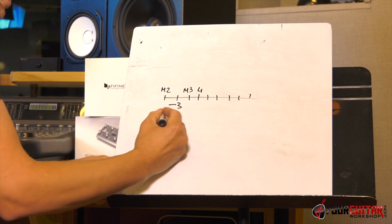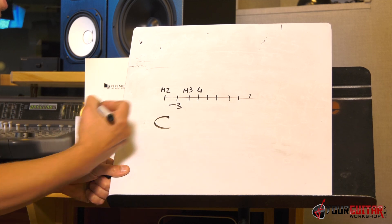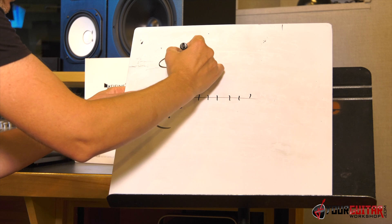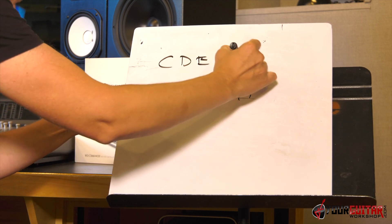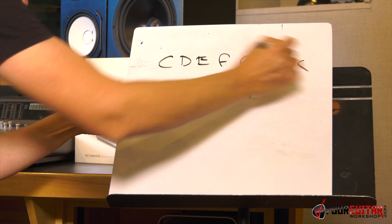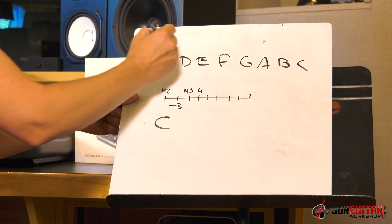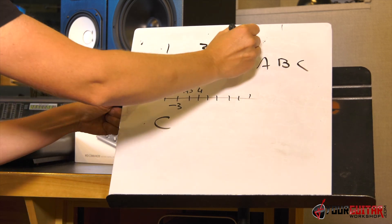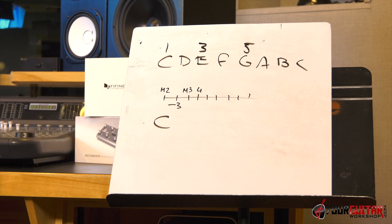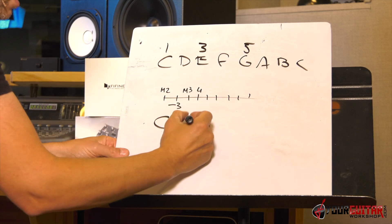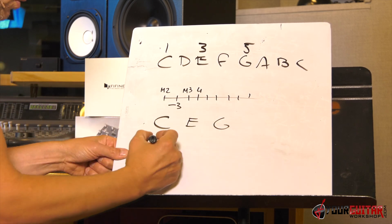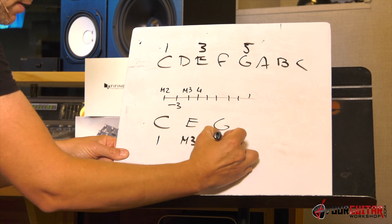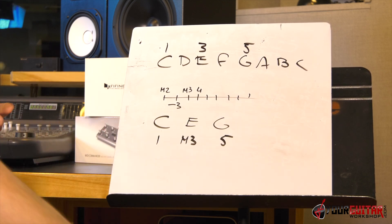The chord that we're playing is C, and so if we have the C scale here — C, D, E, F, G, A, B, C — the C chord is built from the first, the third, and the fifth note of that scale. So that is C, E, G — or one, major third, and fifth.